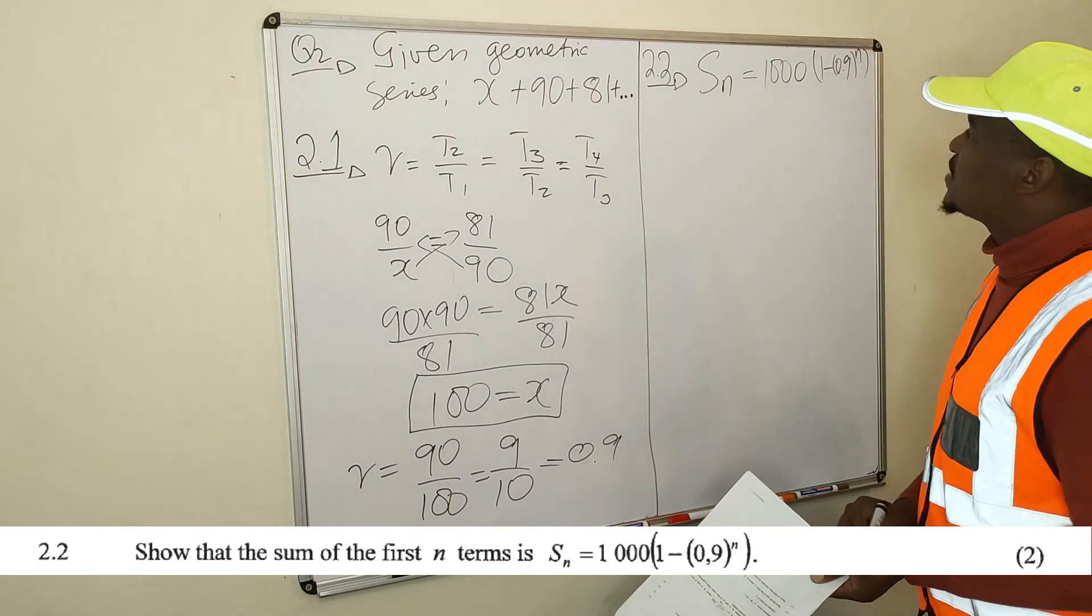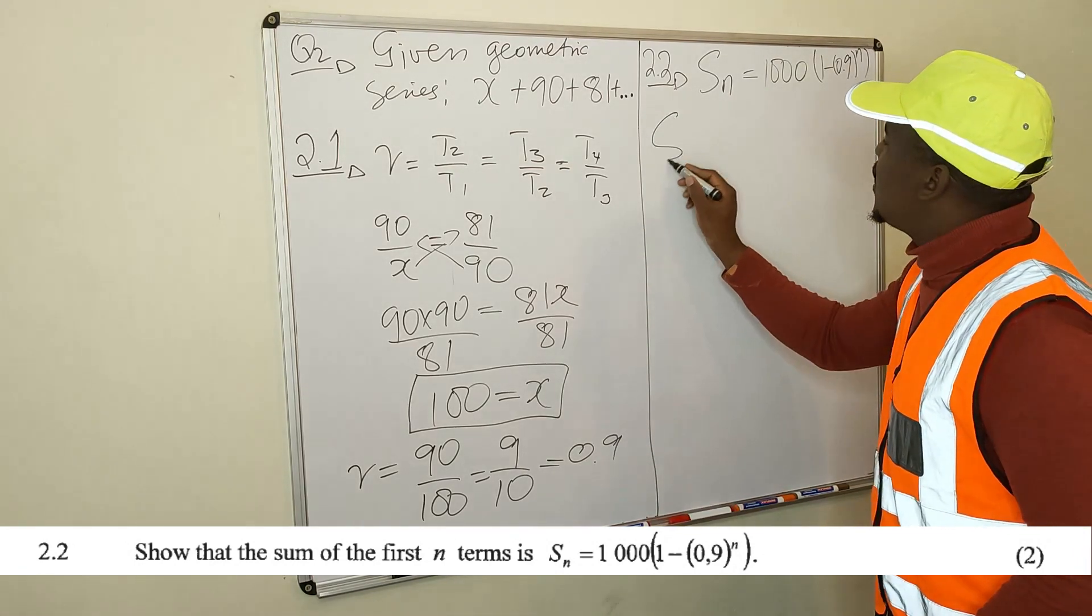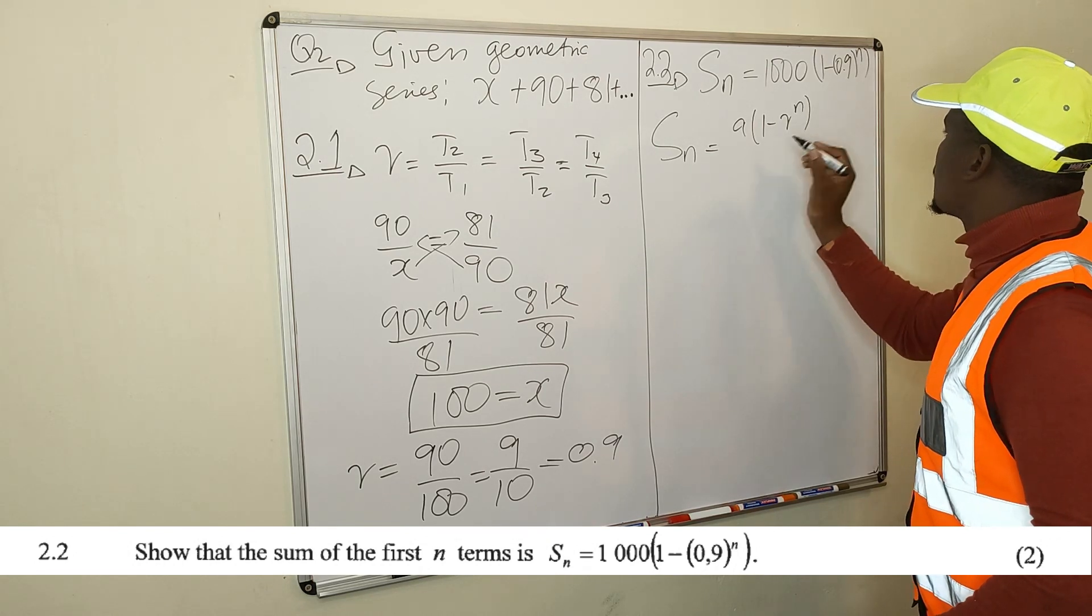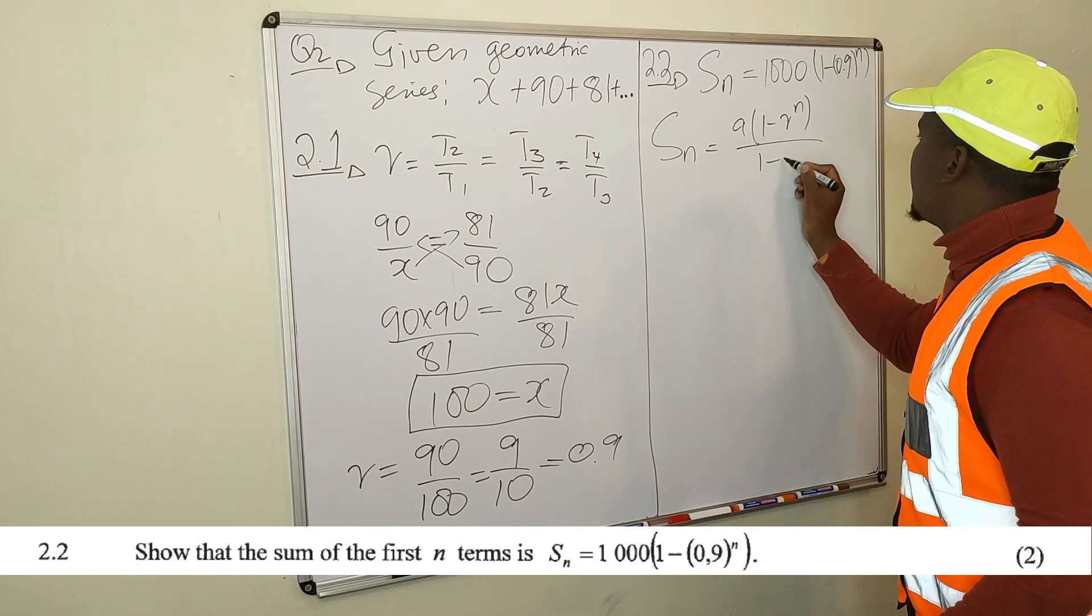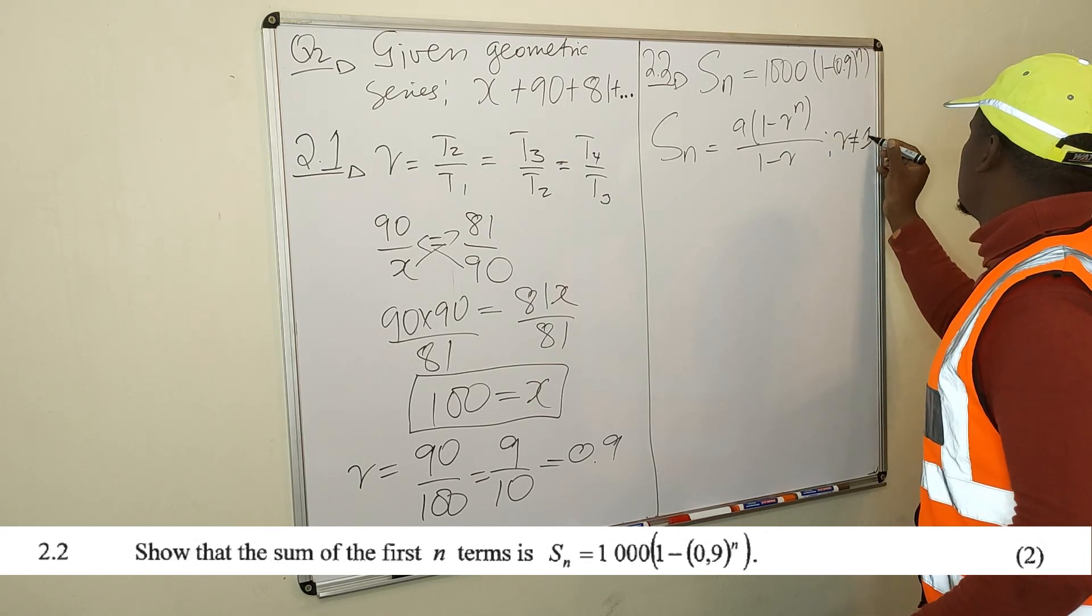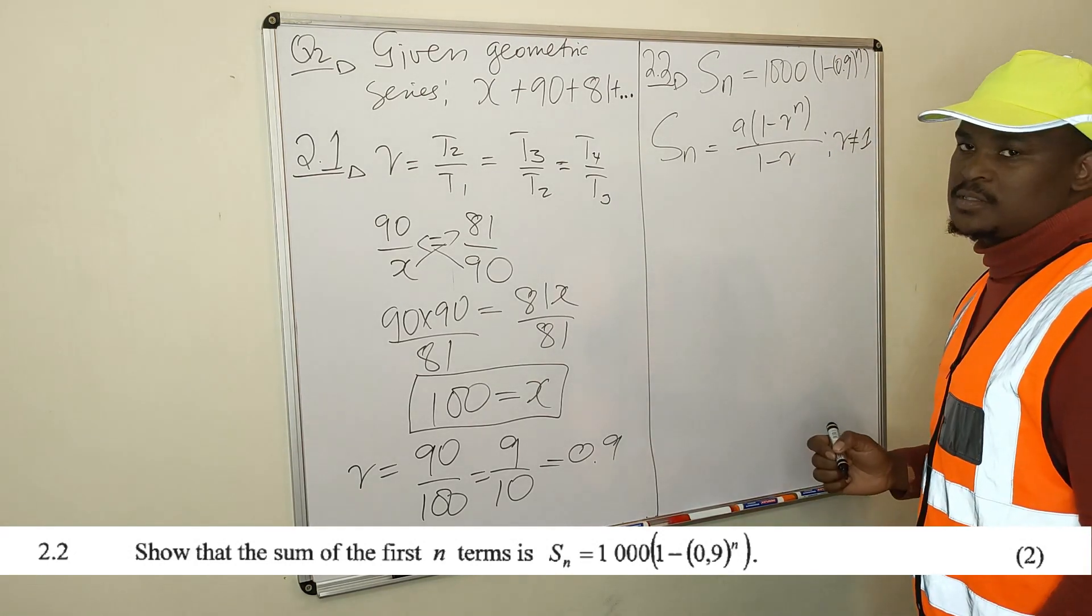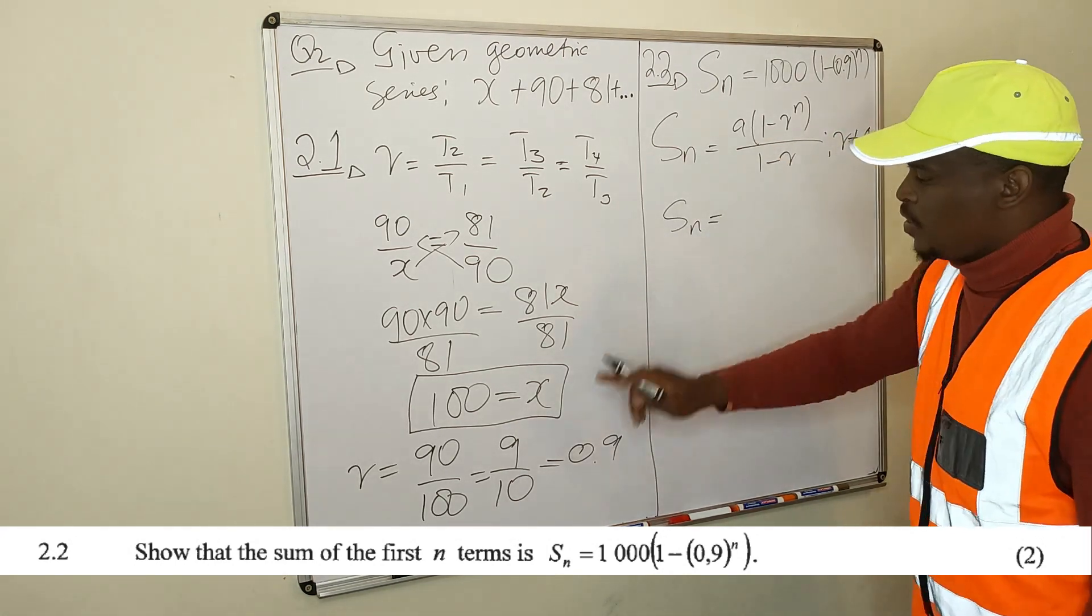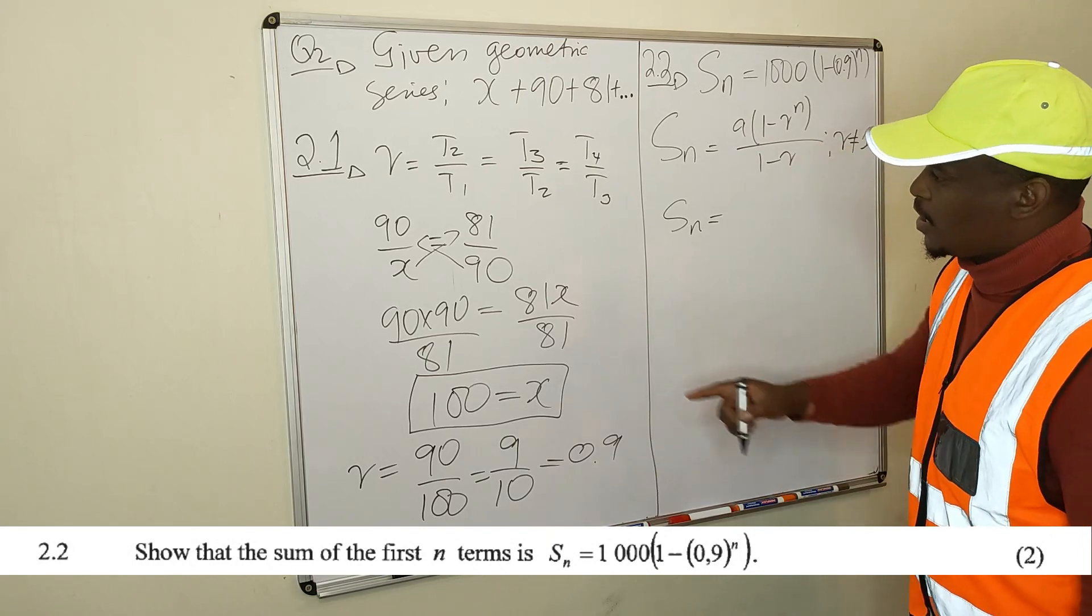Now if you want to find the sum of the geometric series, you know that you find using S_n is equal to A times 1 minus R to the n, all over 1 minus R, where your R is not equal to 1. And then now you substitute. A, what is your A? Your A is equal to 100, it's x, 100.